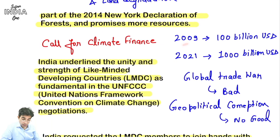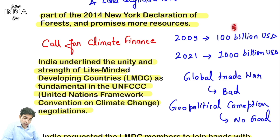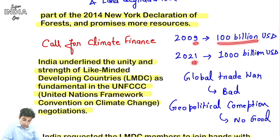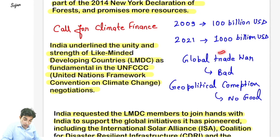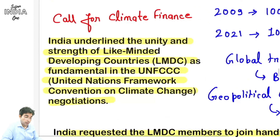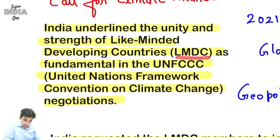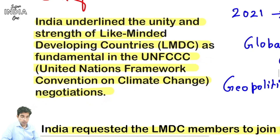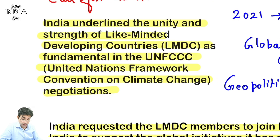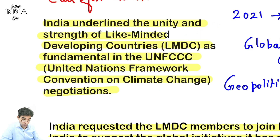Pledge number 3 hai call for climate finance. 2009 mein Copenhagen summit mein 100 billion US dollar ka ek Green Climate Fund banana tha per year - developed countries provide karengi so that climate change mein paisa lagta hai adaptation and mitigation mein, wo paisa yahan se aayega. Ab 2021 hai, isko hazaar karne ki zaroorat hai. India ne ek aur baat yahan pe rakha - LMDC: Like Minded Developing Countries. Inki unity aur strength zarori hai UNFCCC United Nations Framework Convention on Climate Change ki negotiation mein.